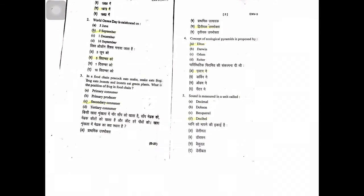The paper of Environmental Studies Examination 2018. Question number one: The Wildlife Protection Act was formed in 1972. World Pollution Day is celebrated on 5th of September. In a food chain, peacock eats snake, snake eats frog, frog eats insects, and insects feed on green plants. What is the position of frog in the food chain?